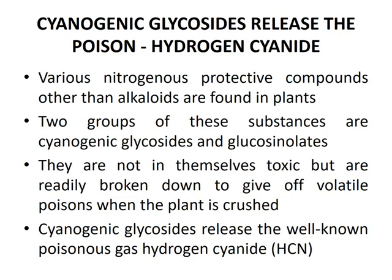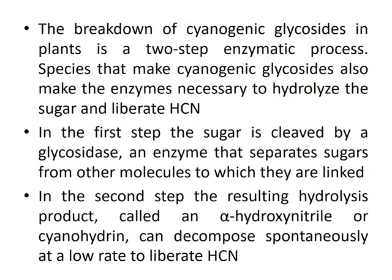Cyanogenic glycosides release the well-known poisonous gas hydrogen cyanide. The breakdown of cyanogenic glycosides in plants is a two-step enzymatic process. Species that make cyanogenic glycosides also make the enzymes necessary to hydrolyze the sugar and liberate hydrogen cyanide. In the first step, the sugar is cleaved by a glycosidase, an enzyme that separates sugar from other molecules to which they are linked. In the second step, the resulting hydrolysis product called an alpha-hydroxynitrile or cyanohydrin can decompose spontaneously at a low rate to liberate hydrogen cyanide.